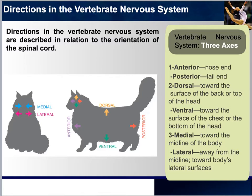The vertebrate nervous system is composed of three axes. The first is anterior-posterior: anterior referring to the nose end, posterior referring to the tail end. The second axis is dorsal-ventral: dorsal looking toward the top of the spinal cord and brain with quadrupeds.